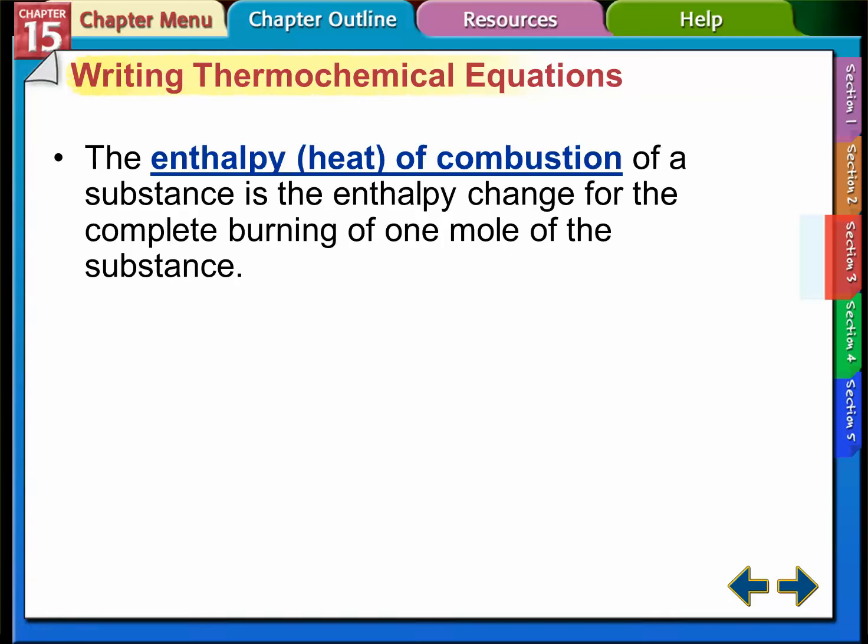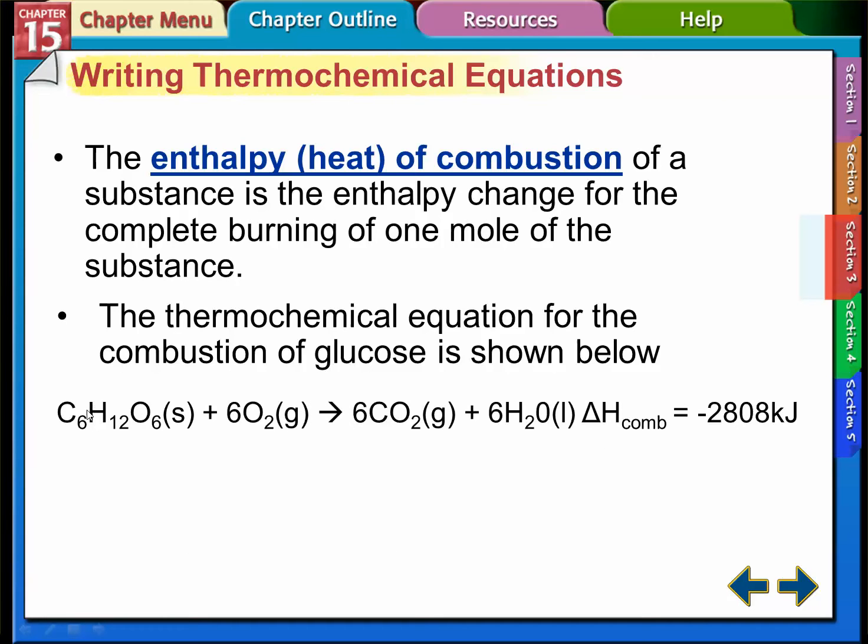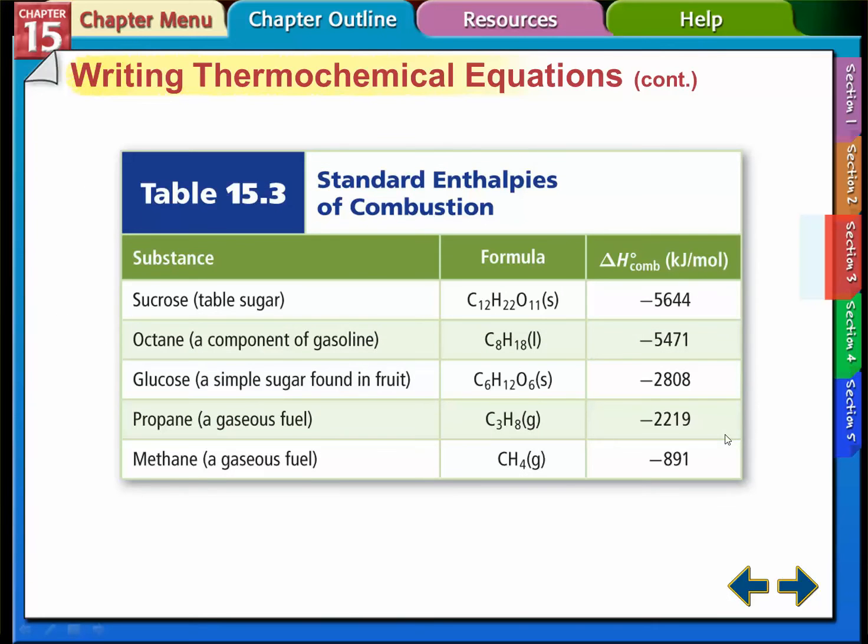The enthalpy, or heat of combustion, of a substance is the enthalpy change for the complete burning of one mole of a substance. All these enthalpy delta H changes in heat have to do with one mole of whatever we're talking about. The thermochemical equation here is for glucose. So when we burn one mole of glucose, we're going to get a little over 2800 kilojoules of heat released. That's how many kilojoules we're going to get released. That's what the thermochemical equations mean.